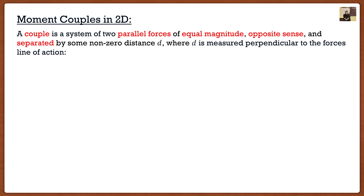What these forces actually do is create something called a couple. The best way to show you guys this is to show you a beam. So let's say I had a beam here, and I had two forces on the beam — one force going downwards and one force going upwards, so they're opposite and parallel. They have the same magnitude, which I'm going to call F. The final requirement is that these two forces are separated by some distance, D.